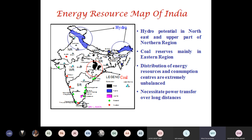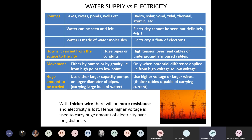When the grid fails, a whole region goes dark. For example, the northern grid spans from Punjab all the way to Bihar — that entire area would be in pitch darkness. This has actually happened. Furthermore, when power generation happens at one point and travels kilometers away, there is a significant loss of energy.